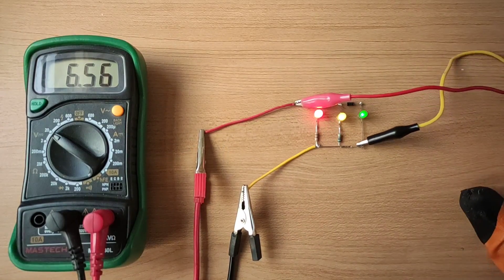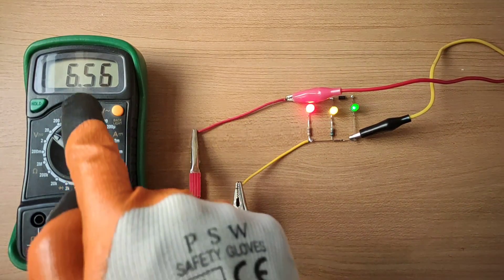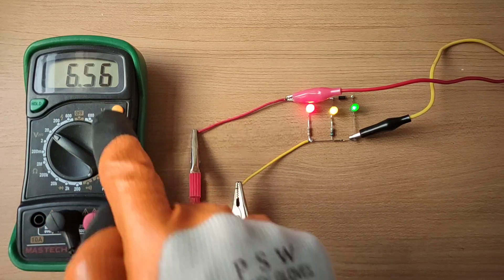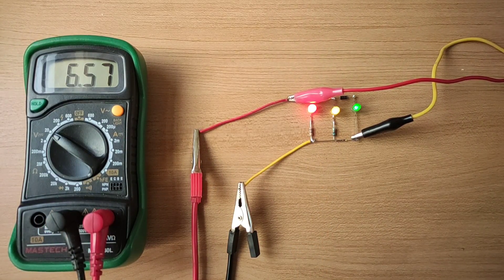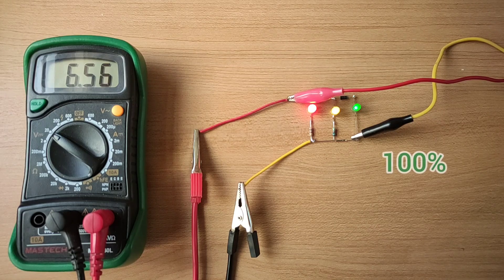Normally a fully charged 6-volt battery provides 6.6 volts. And as you can see, all three LEDs are glowing at 6.6 volts and indicate battery level as 100%.